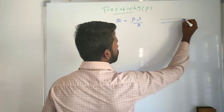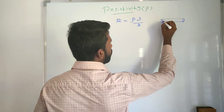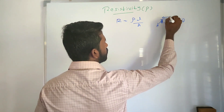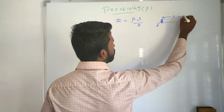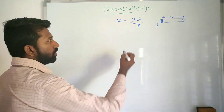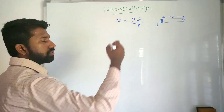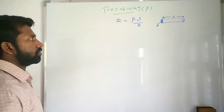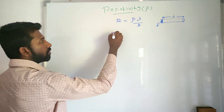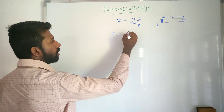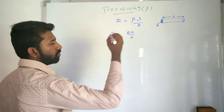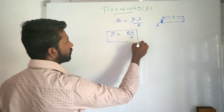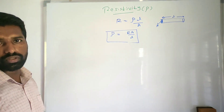What is the area cross-section? This is the area cross-section A, and this L is the length. Here, this rho factor is dependent upon the material. So what is rho from here? Rho is equal to R times A by L. This is the formula for resistivity based on resistance.